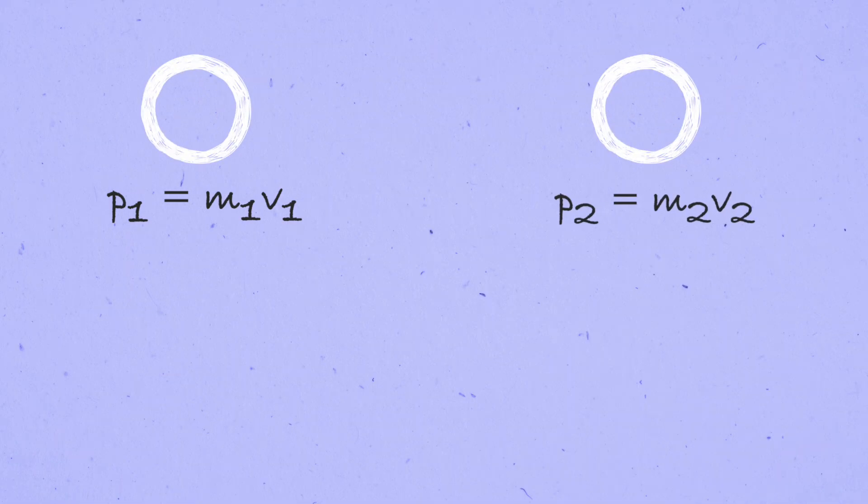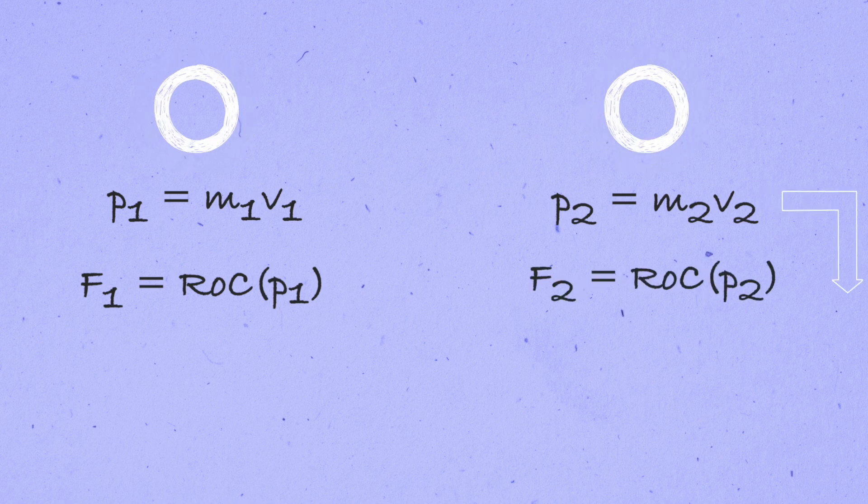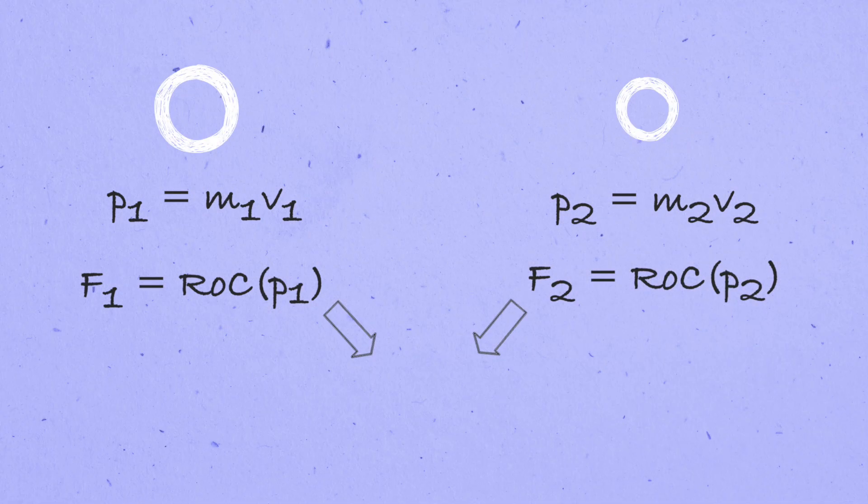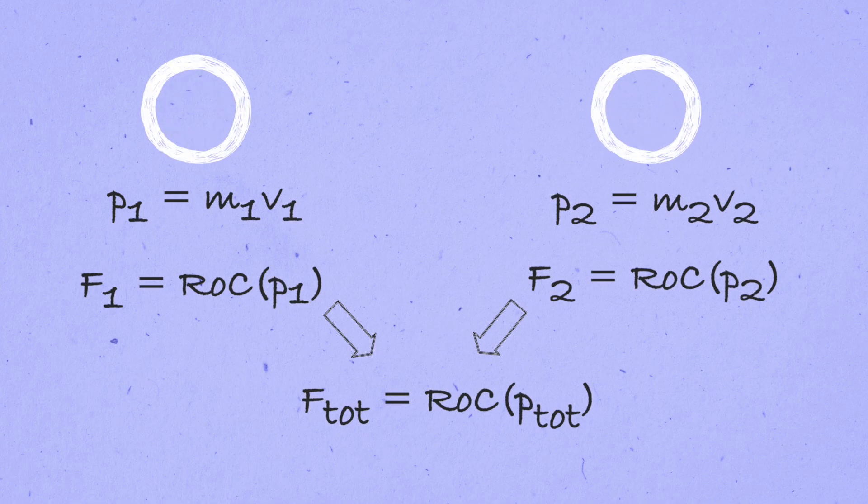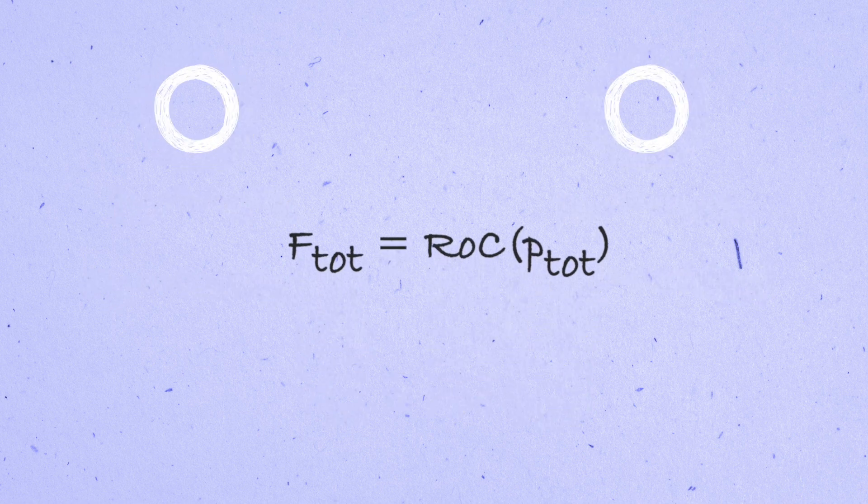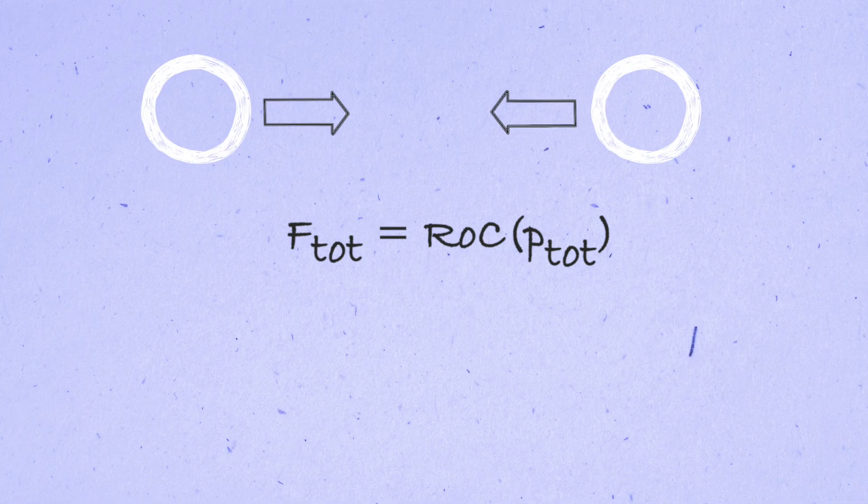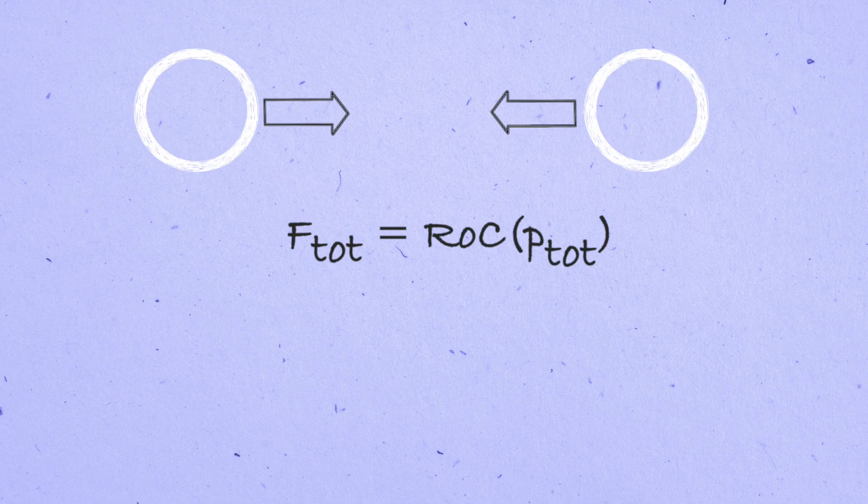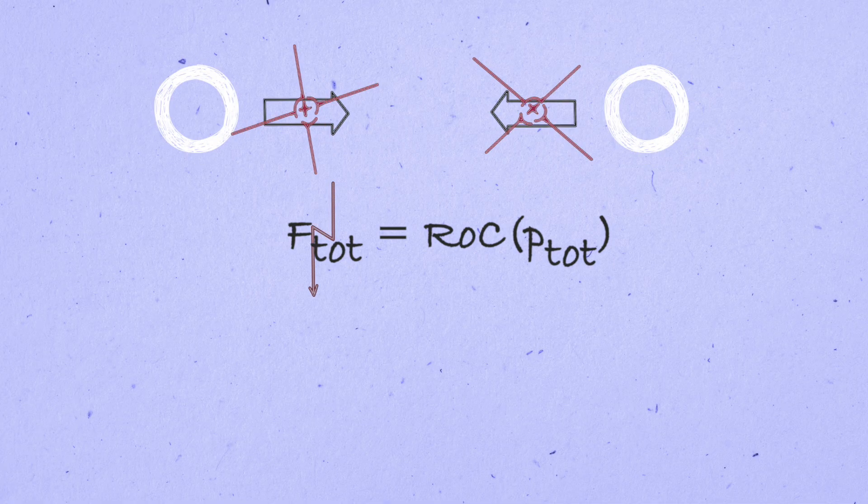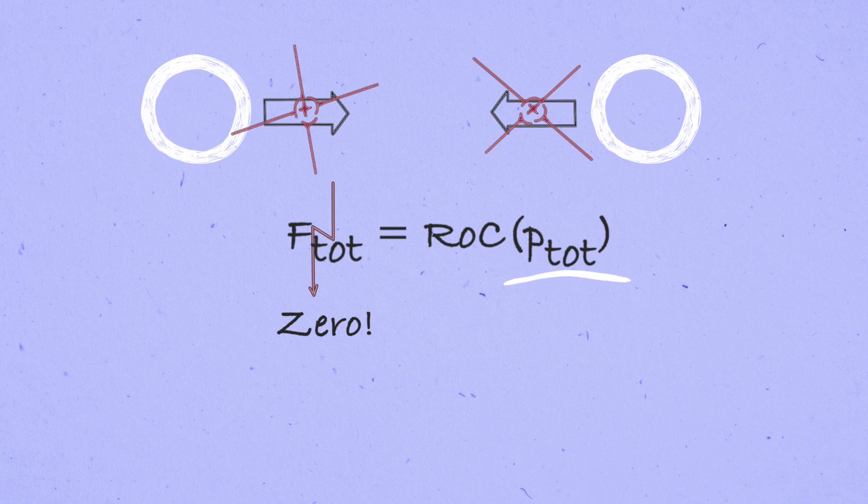And we can treat the case with multiple particles similarly. We assign a momentum to each particle. p1 equals m1v1 and p2 equals m2v2. Then the force on particle 1 is the rate of change of its momentum and likewise for particle 2. And if we add these together, we learn that the total force on the two-particle system is equal to the rate of change of the total momentum. Now comes the key point. Because Newton's third law assures that the force on particle 1 is equal but opposite to particle 2, when we add them together to find the total force on the system, they cancel out and we get zero. Therefore, the rate of change of the total momentum vanishes and so the total momentum is conserved.